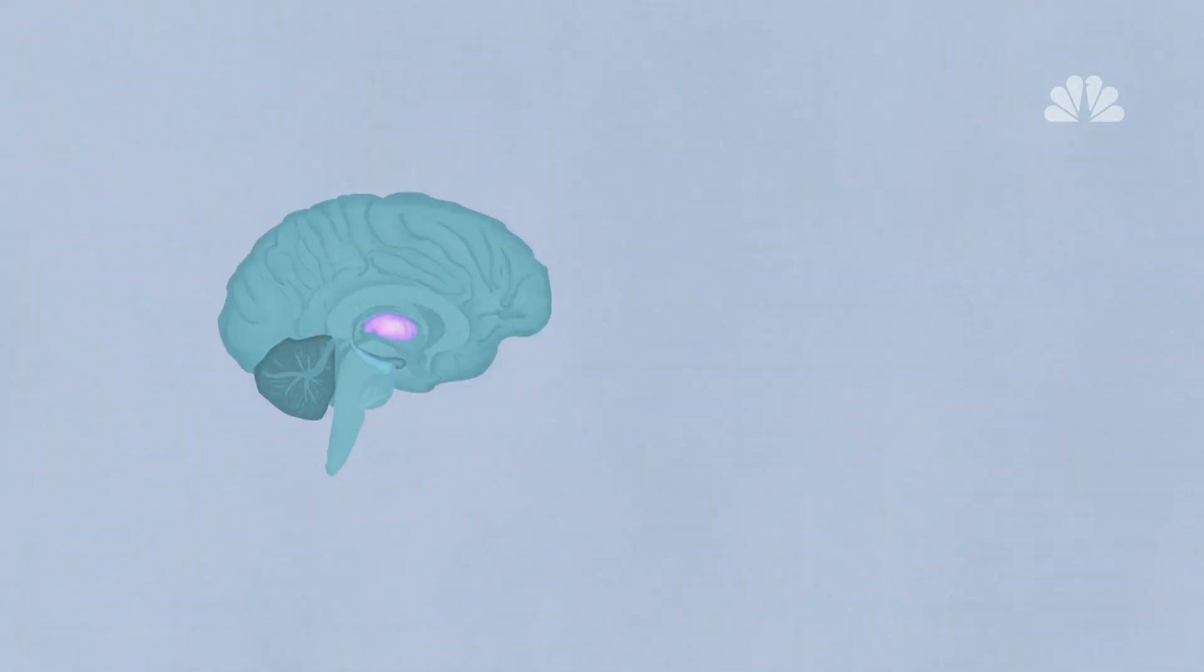The third main area is the thalamus, which helps link sensory information to good and bad feelings. Problems in the thalamus may be linked to conditions such as bipolar disorder.